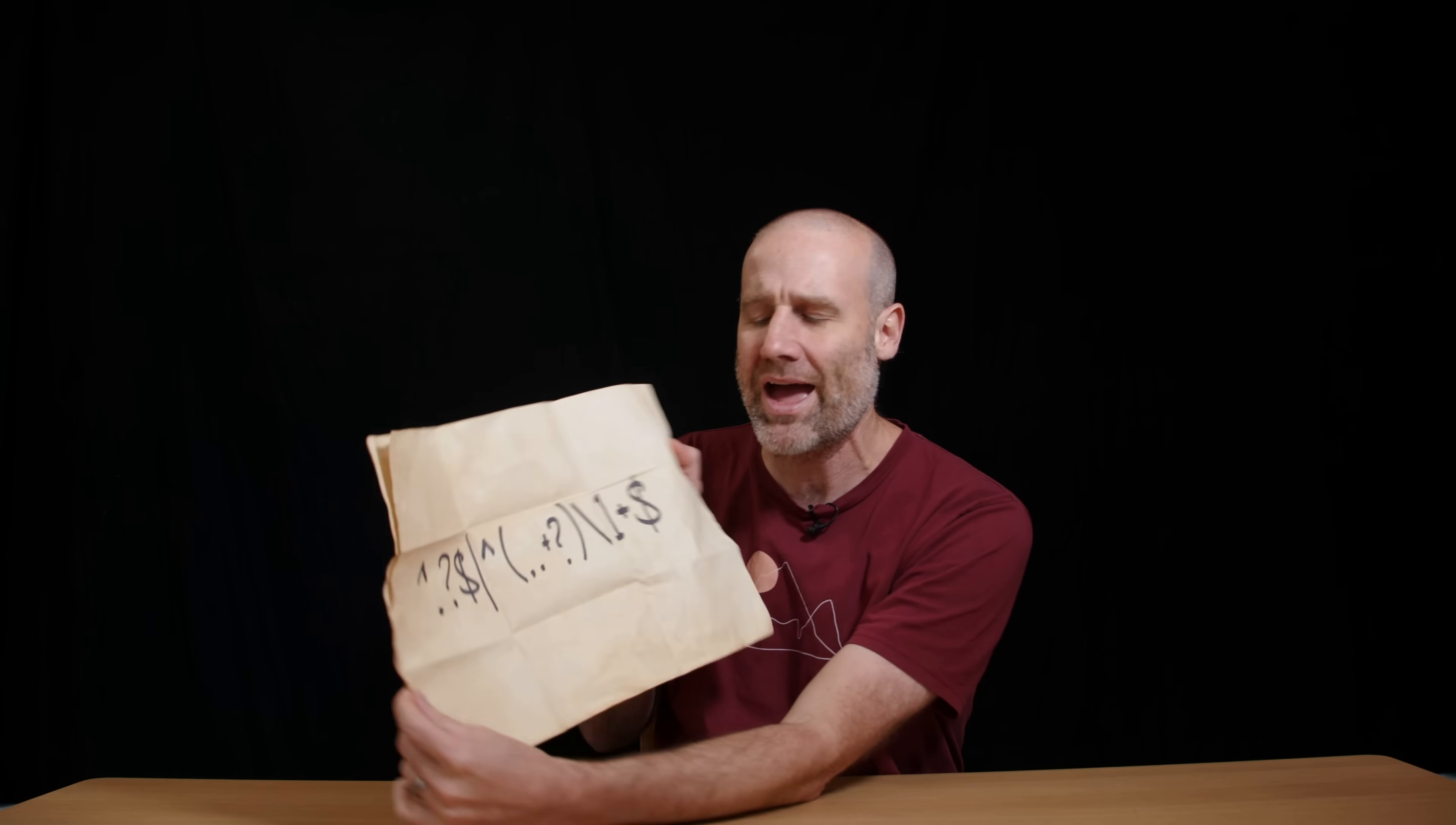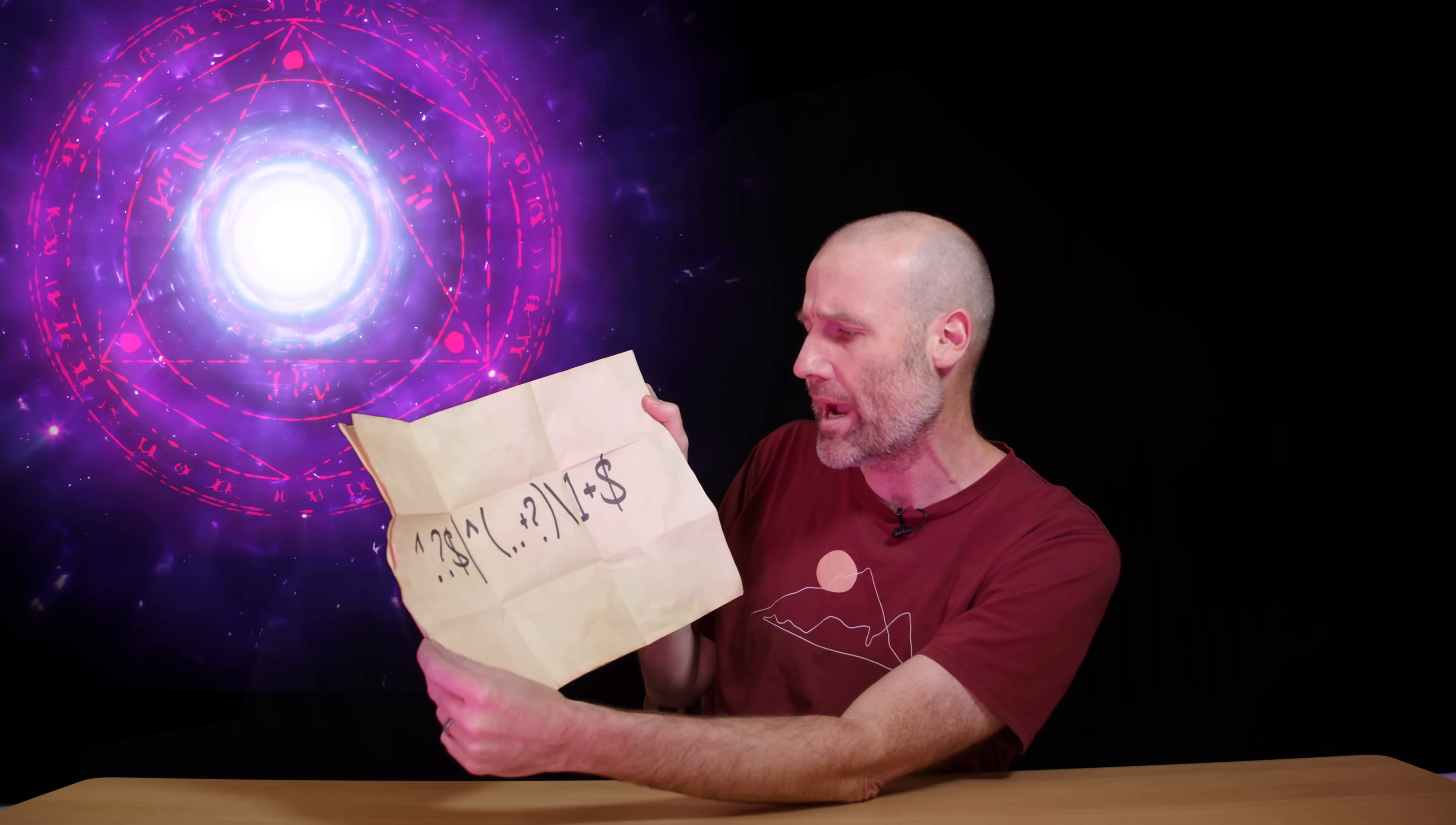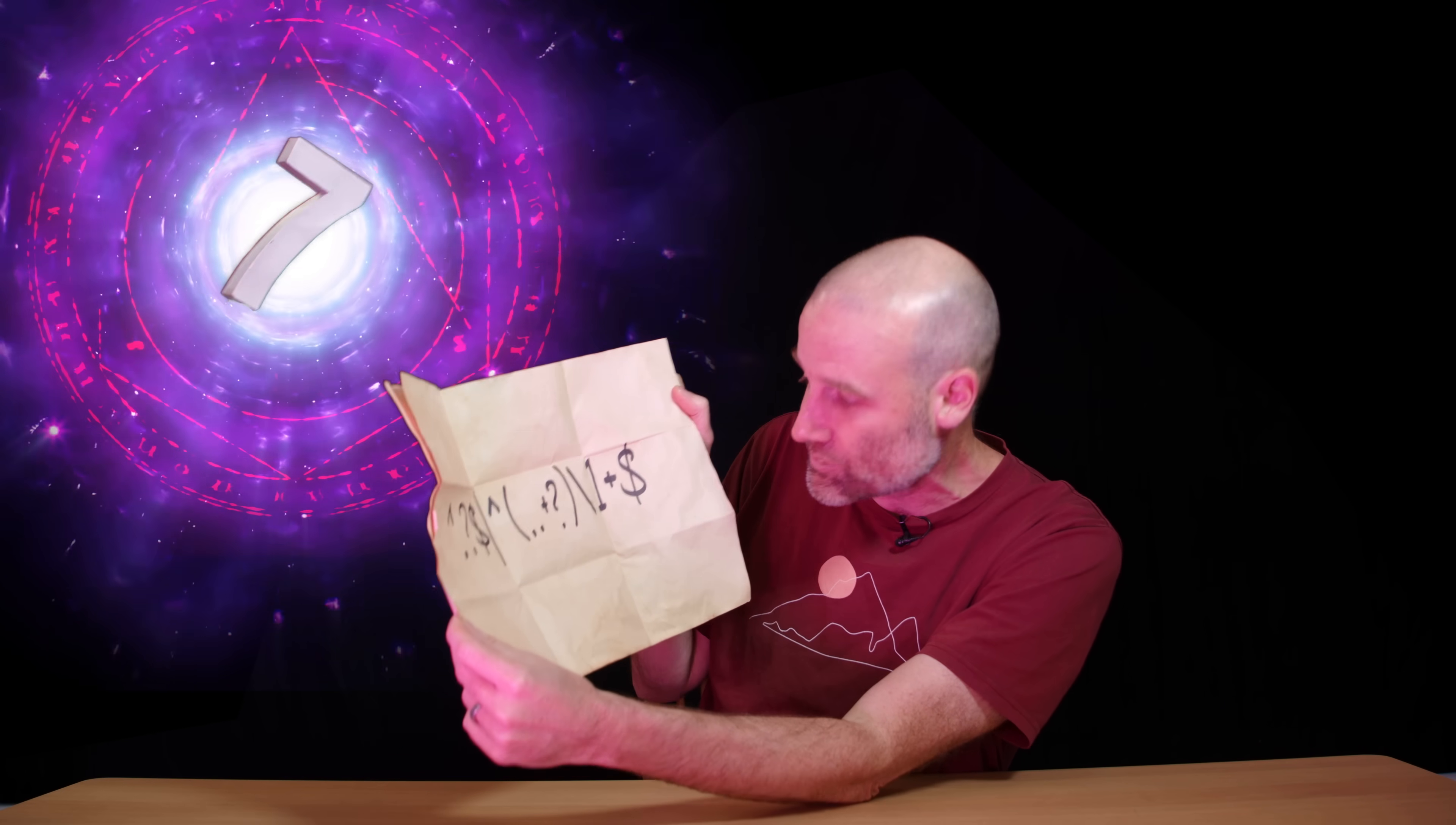Although it's not spooky, is it? It's just gonna be maths. Just somehow, up arrow, dot, question mark, dollar sign, vertical line, up arrow, open brackets, dot dot, plus question mark, close brackets, backslash, one, plus dollar sign, is able to conjure up prime numbers.